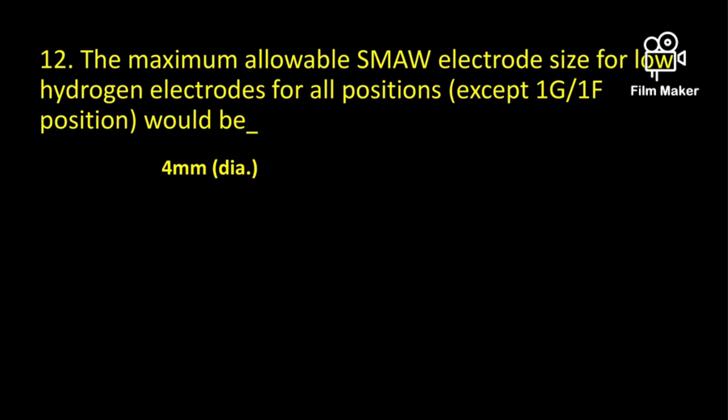The maximum allowable SMAW electrode size for low hydrogen electrodes for all positions except 1G (flat position only) is 4 mm diameter.